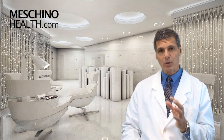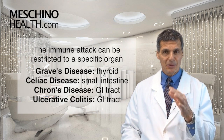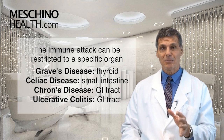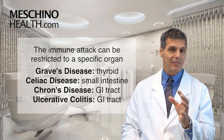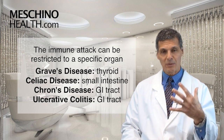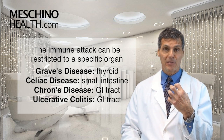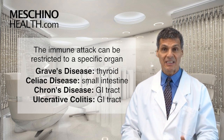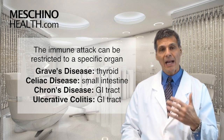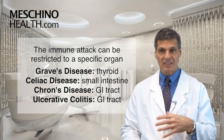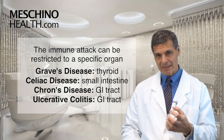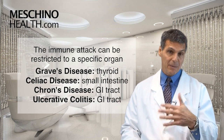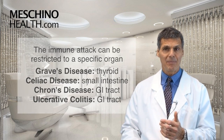Sometimes in autoimmune disease, the immune attack is restricted to a specific organ. Sometimes things like Graves' disease, where it's attacking primarily the thyroid gland, or in celiac disease, which is in the gut. And Crohn's disease and ulcerative colitis are primarily limited to the intestinal tract, though other tissues can be affected.